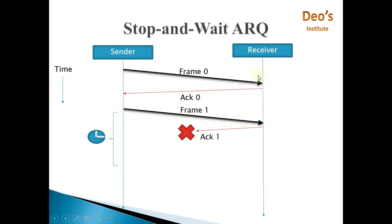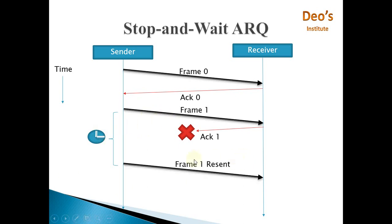Now consider that the acknowledgement for frame 1 is lost in the network — it doesn't reach the sender. When frame 1 is sent, a copy of frame 1 is available at the sender and the sender starts a timer. It waits until the timer ends, but acknowledgement 1 is not received. The sender incorrectly assumes frame 1 is lost in the network, so it will send frame 1 again and the receiver has to acknowledge it again.